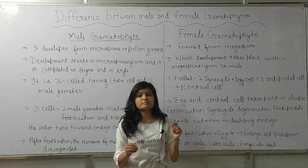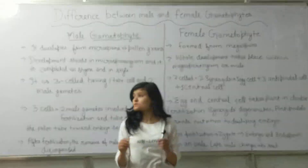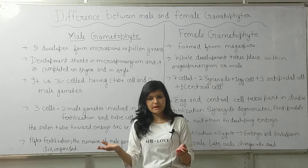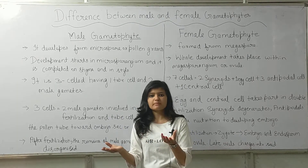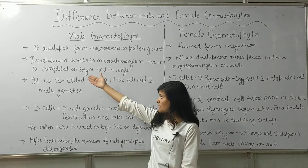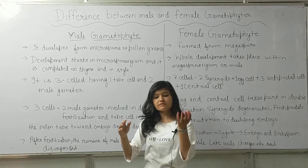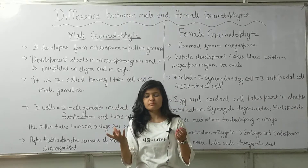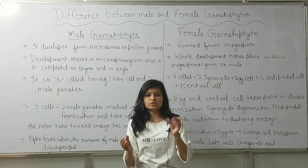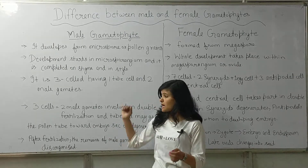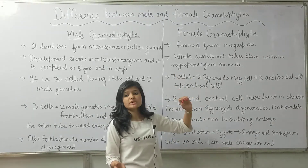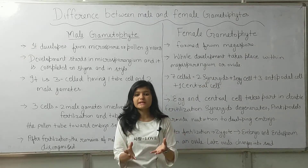The female gametophyte is formed from the macrospore. Regarding development, the male gametophyte begins its development in the male part, but completes its development after reaching the stigma, and finally the pollen tube enters through the style.